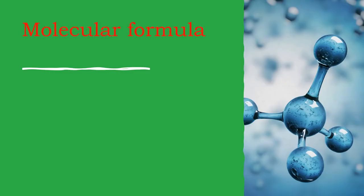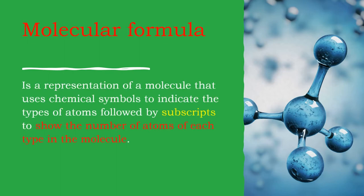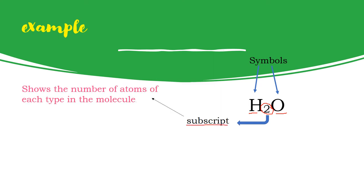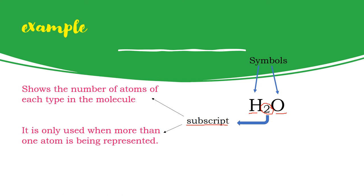The next concept is molecular formula. A molecular formula is a representation of a molecule that uses chemical symbols to indicate the types of atoms, followed by subscripts to show the number of atoms of each type in the molecule. It is only used when more than one atom is being represented. So if you notice, oxygen has no number written because there's only one — when there's only one, the number one is not written.